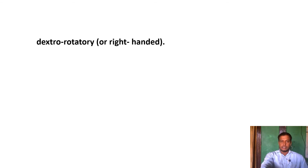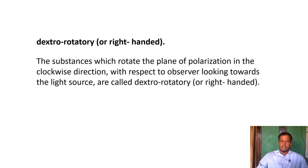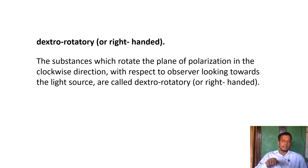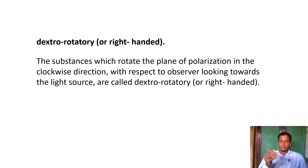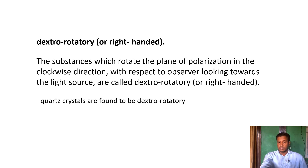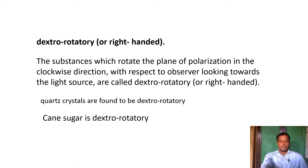Dextrorotatory substances rotate the plane of polarization in the clockwise direction when you face the light source. Quartz crystal is found to be dextrorotatory, rotating the plane of polarization in the clockwise direction. Cane sugar is also dextrorotatory.